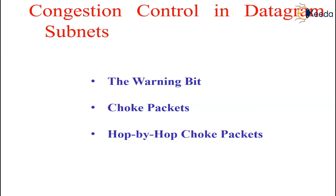Several variations on this congestion control algorithm have been proposed. For one, the routers can maintain several thresholds. Depending on which threshold has been crossed, the choke packet can contain a mild warning, a stern warning, or an ultimatum.